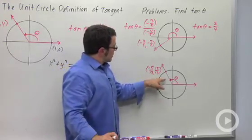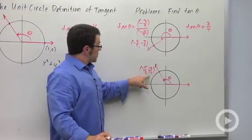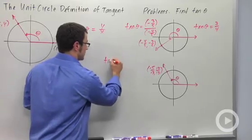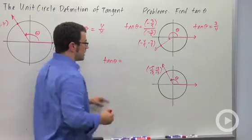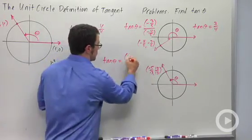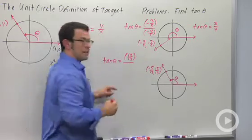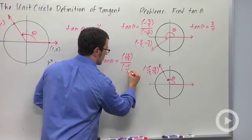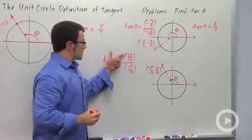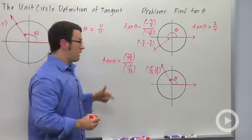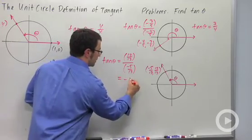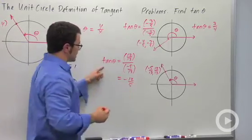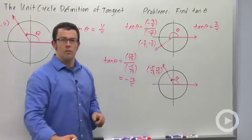Here, what's the tangent of theta? We have the two coordinates x and y. Tangent theta is the y coordinate, 12/13, divided by the x coordinate, negative 5/13. This is going to give me 12 over negative 5, or negative 12/5. So the tangent theta is negative 12/5.